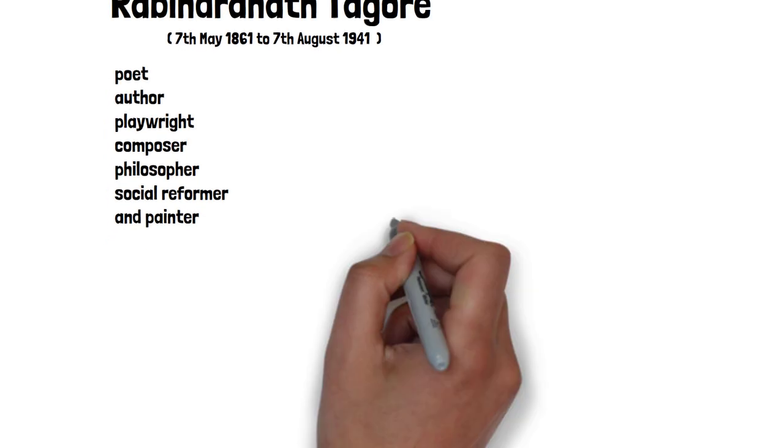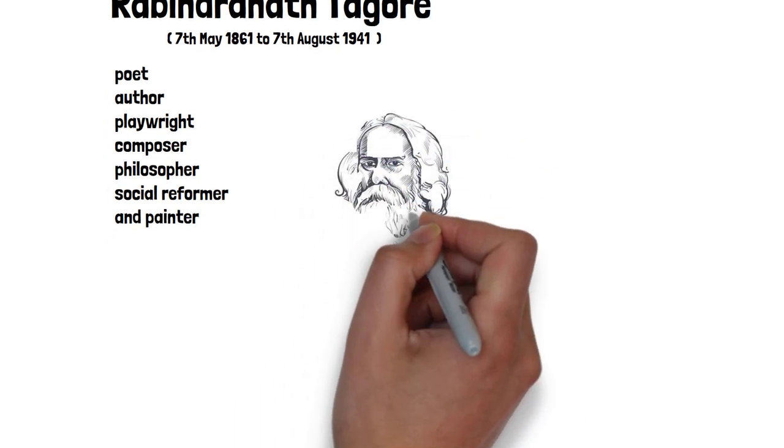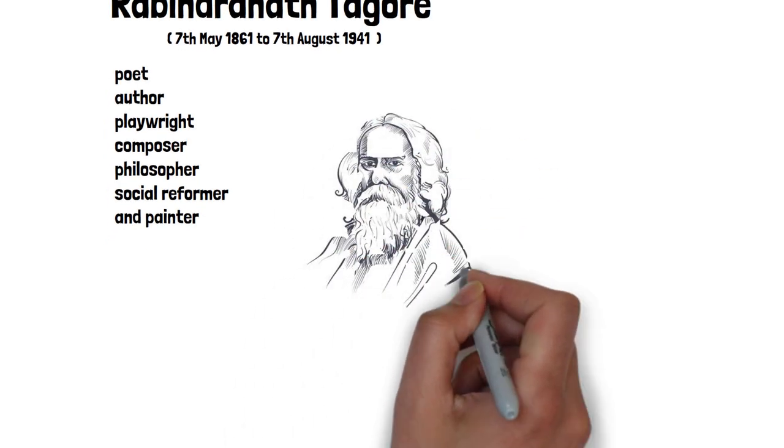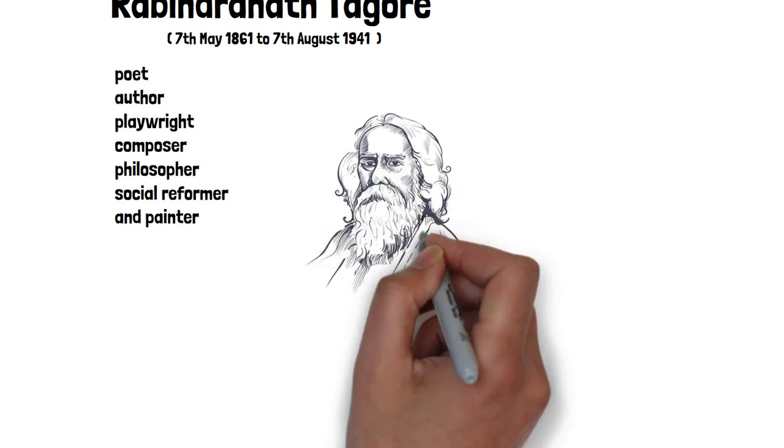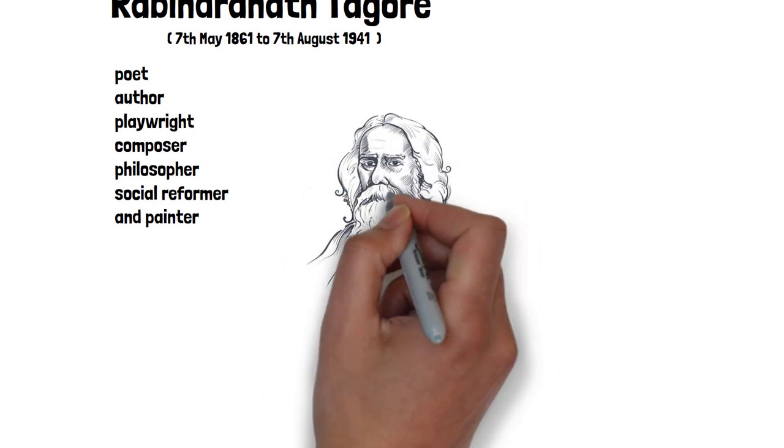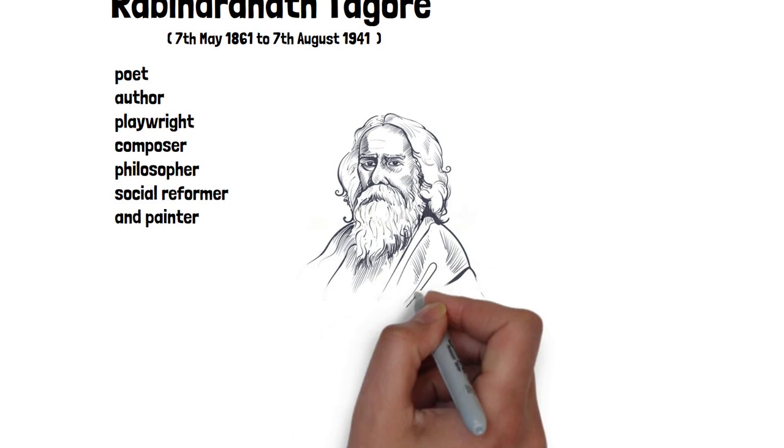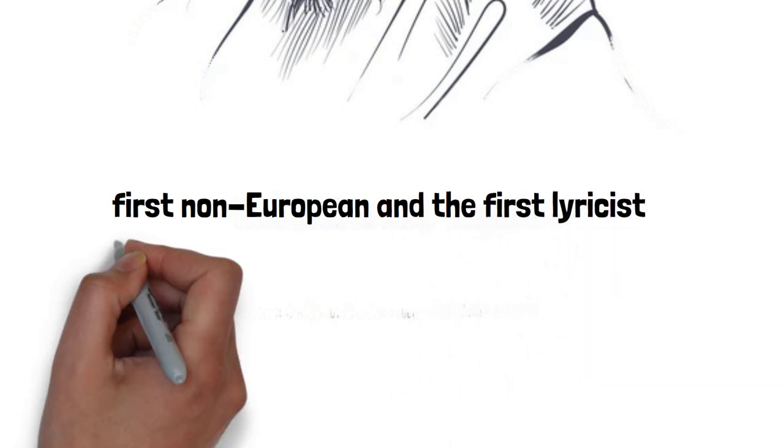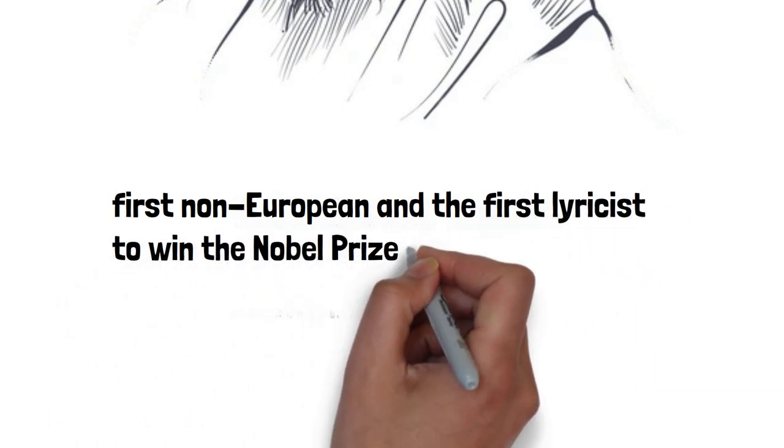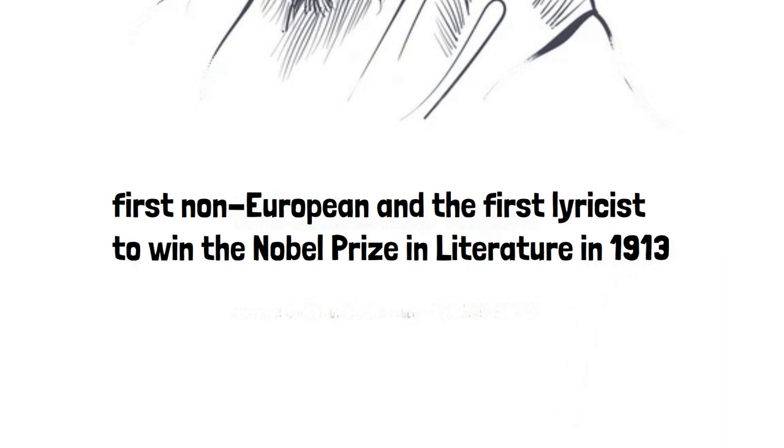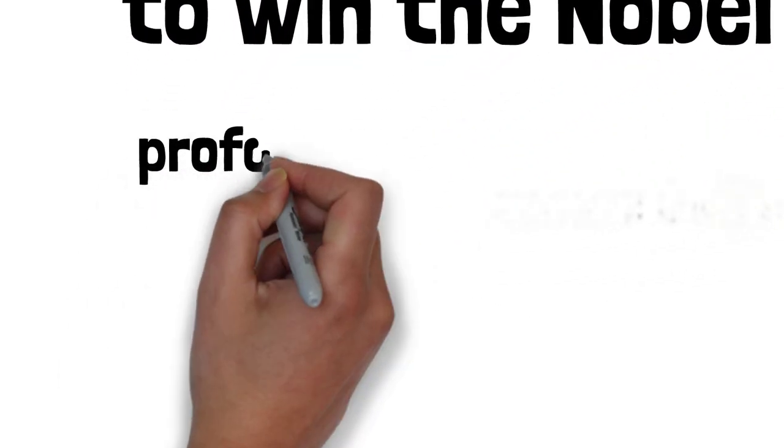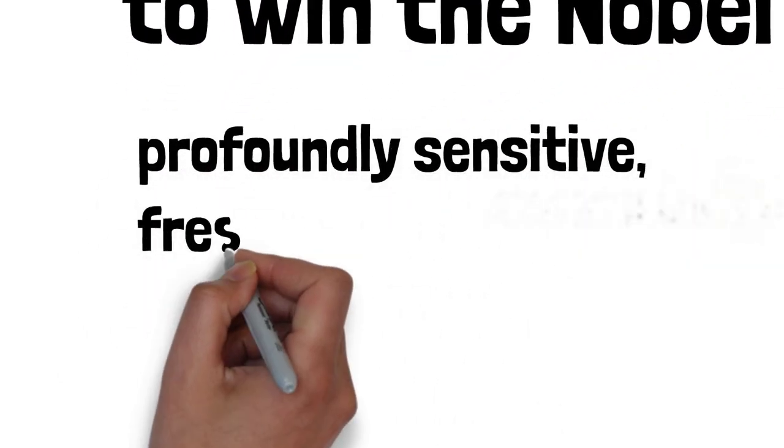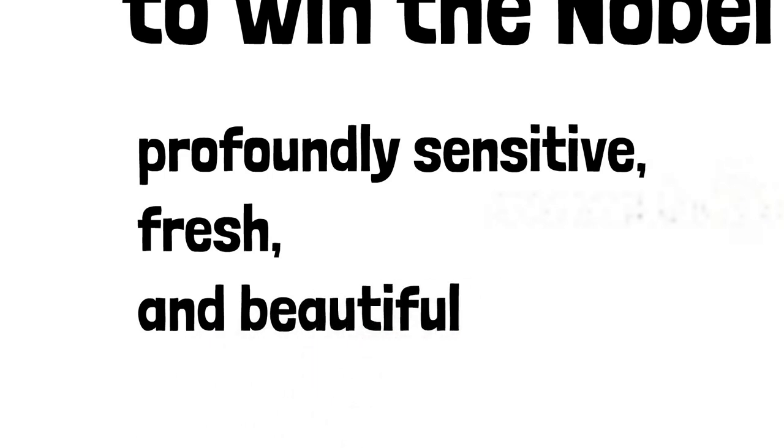In the late 19th and early 20th centuries, he used contextual modernism to transform Indian art, Bengali literature, and music. He was the first non-European and the first lyricist to win the Nobel Prize in Literature in 1913, credited with writing the profoundly sensitive, fresh, and beautiful poetry of Gitanjali.